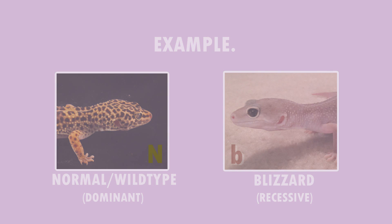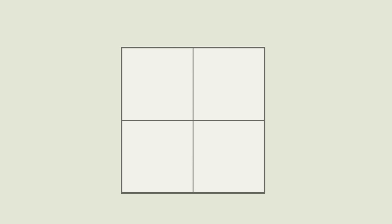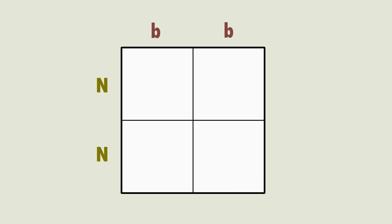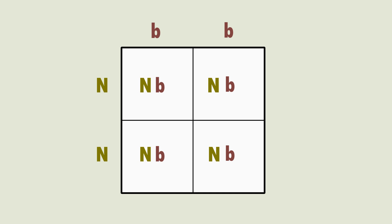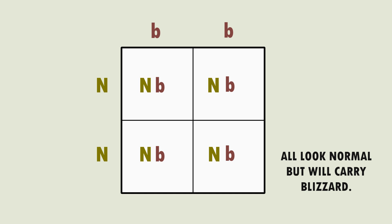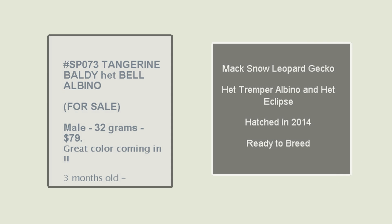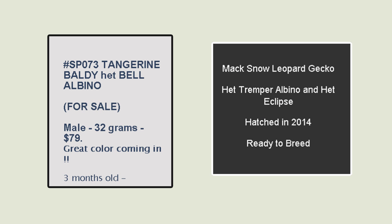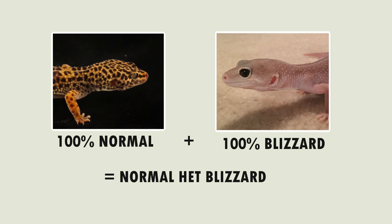A Punnett square is used to predict the outcome of a particular breeding project. In this case the blizzard is the dad — bb along the top — and the normal is the mum — nn along the side. If we fill in the Punnett square we can see that 100% of the offspring will look like their mum and be normal, since capital N is the dominant allele, but they will all carry the recessive blizzard allele. So when you see the word HET when looking up leopard geckos for sale, it refers to the animal carrying a recessive allele which is not visible. The offspring of this pairing will be normal het blizzard — HET is short for heterozygous.